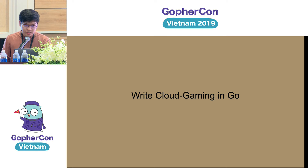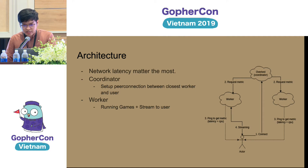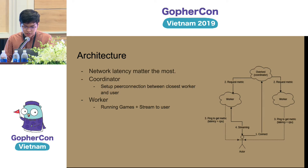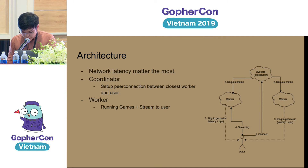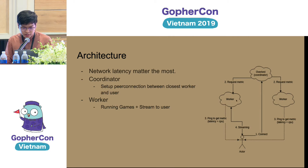Here is how I implement the cloud gaming service in Go. No matter how good your video compression or code is, network latency still contributes the most to overall latency. So the infrastructure needs a mechanism to identify the closest server to the user. When a user connects to the coordinator, it pings the worker nodes to find the closest server for that user. After identifying the best worker, the coordinator sets up the connection between that worker and the user.